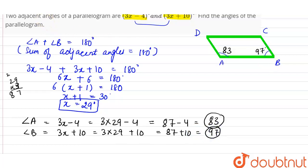Now the property of parallelogram says that angle A is equal to angle C and angle B is equal to angle D. So we can say if angle A is 83, angle C will also be 83 degrees. If angle B is 97 degrees, angle D will equal 97 degrees. So these are the four angles of the parallelogram.